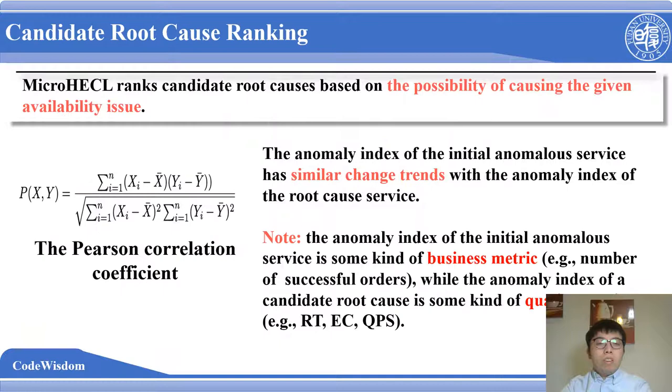Finally, when the anomaly propagation chain analysis is finished, we rank the candidate root causes based on the possibility of causing the given availability issue. We use the Pearson correlation coefficient to measure the similarity of the change trend of the true anomaly index and rank the candidate root cause services by correlation coefficient. It should be noted that the anomaly index of the initial anomaly service is some kind of business metric, e.g., the number of successful orders, while the anomaly index of a candidate root cause is some kind of service metric, e.g., the response time.